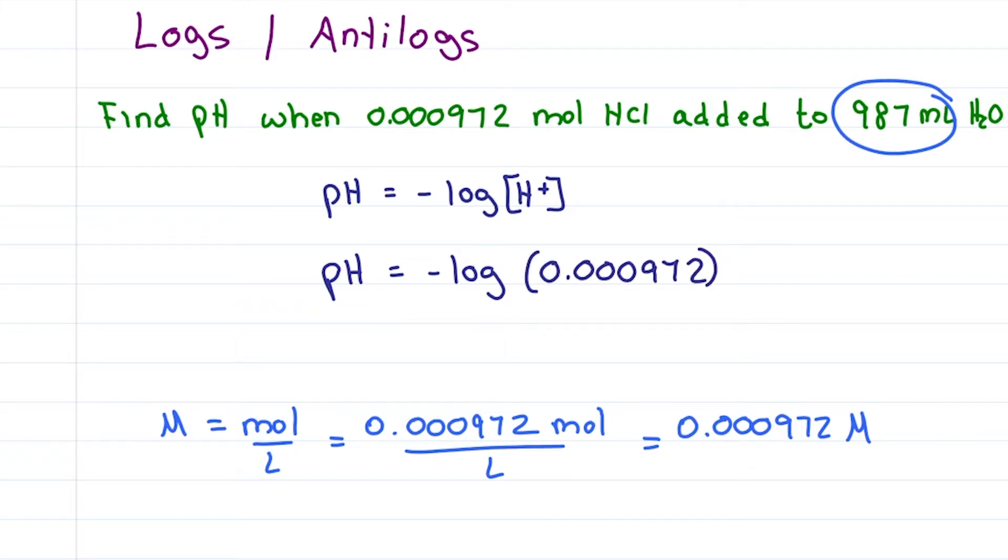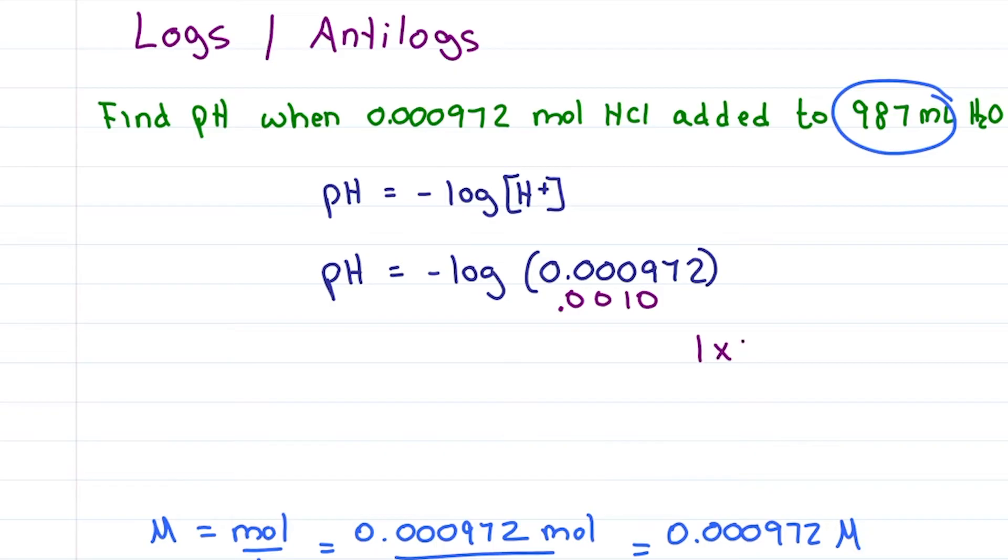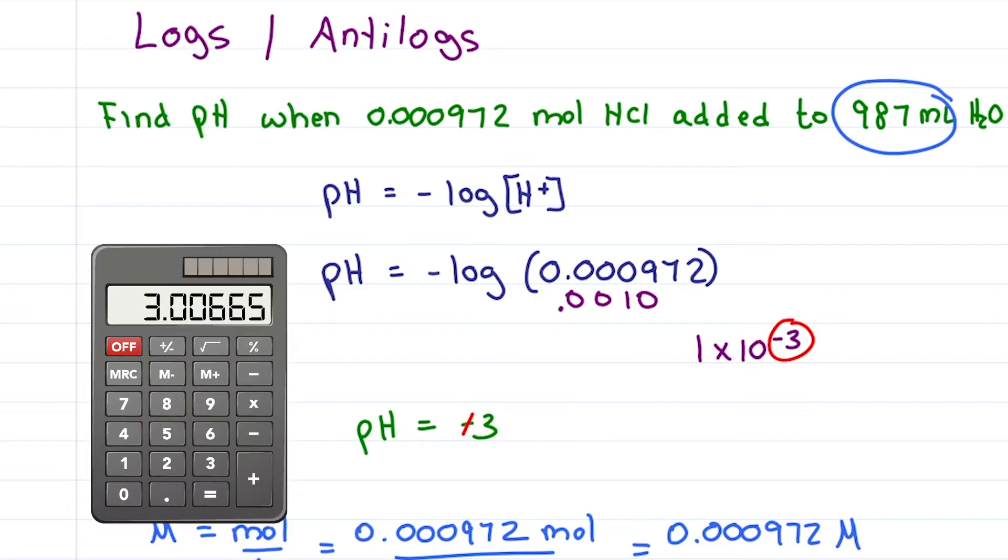So let's simplify and turn it into scientific notation. Remember, when rounding a 9 up to a 10, you move the decimal one place which gives me 1 times 10 to the minus 3 in scientific notation. And now for the MCAT log trick, just take that minus 3, remove the negative because it's negative log and our pH is 3. Calculator says 3.00665 which on the MCAT is close enough.